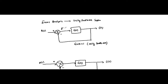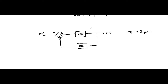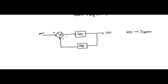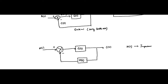The error signal is given by this feedback path transfer function, which is very important. In the unity feedback case, the error signal is simply E(s) = R(s) − C(s), because C(s) multiplied by 1 remains C(s). But in the case of non-unity feedback systems, the error signal is not like that.